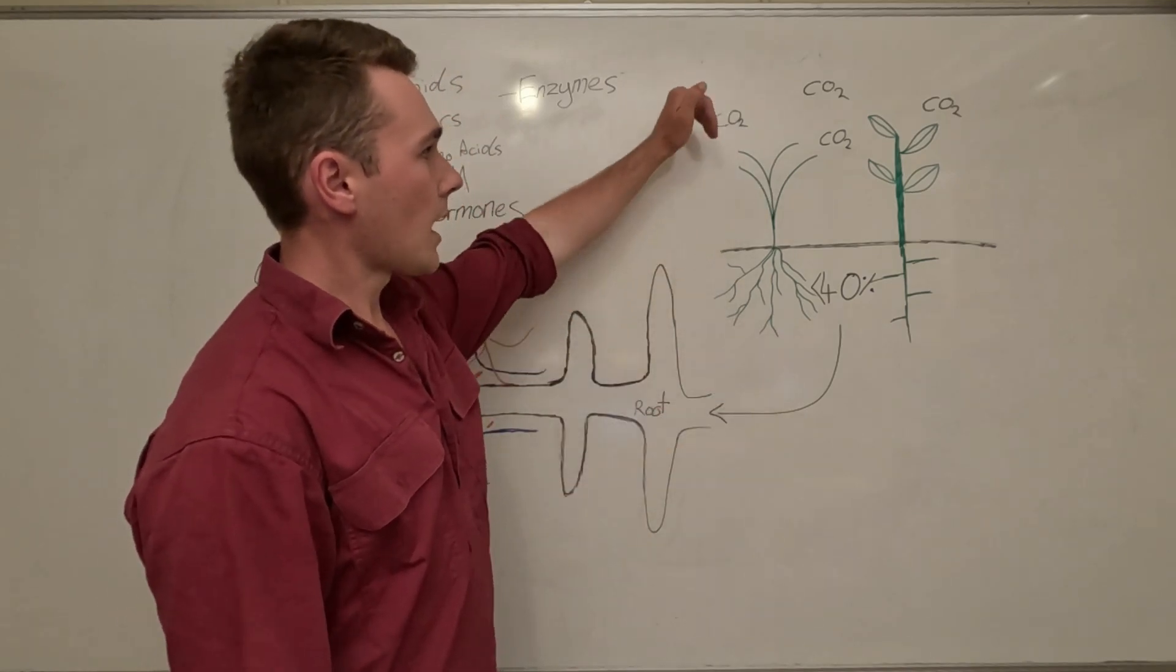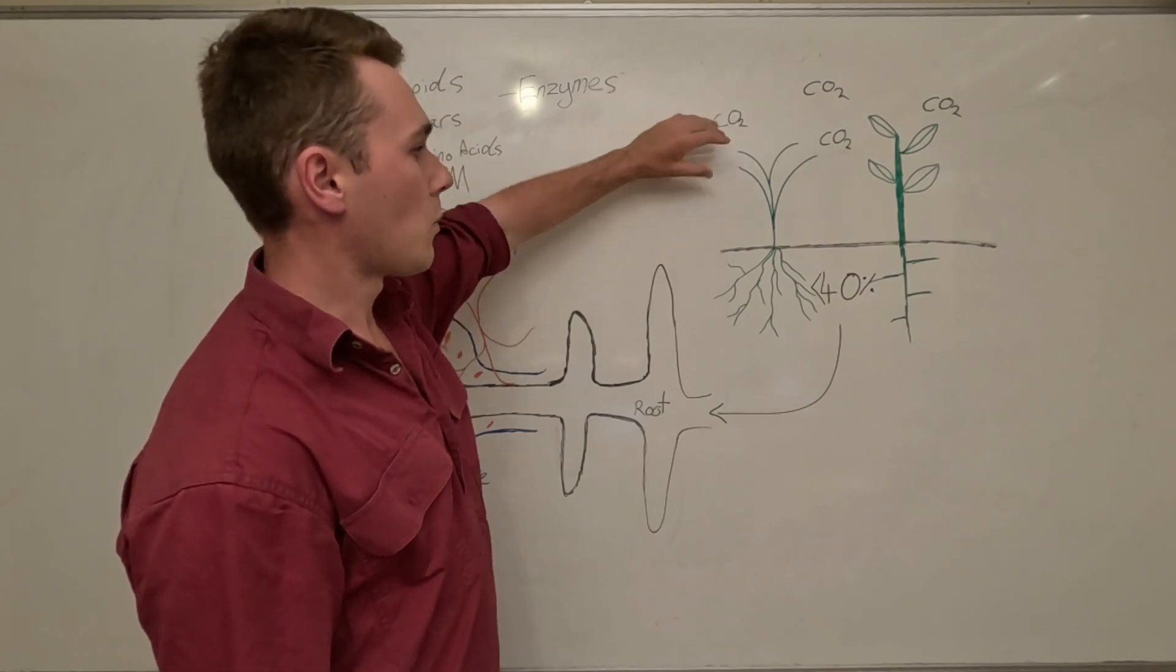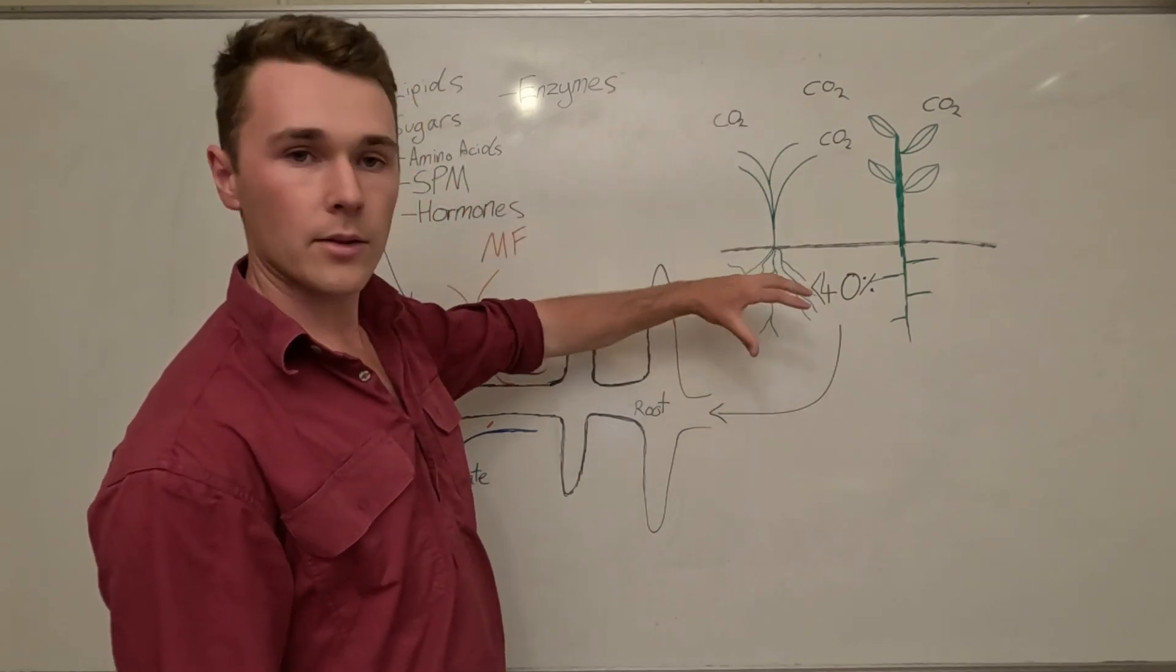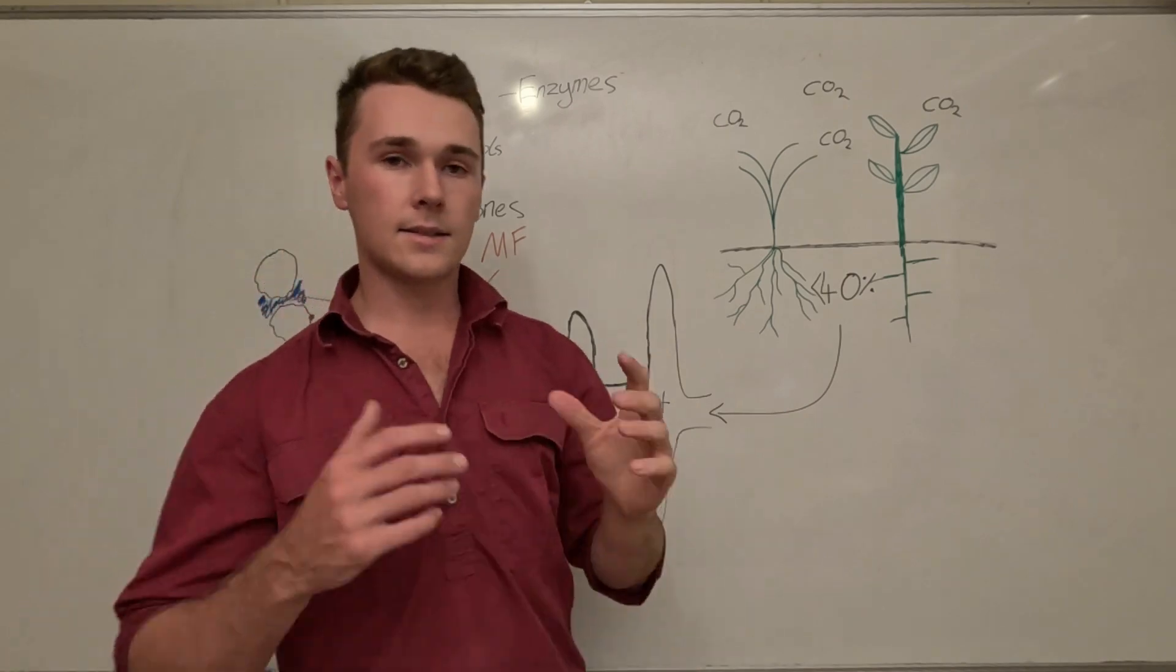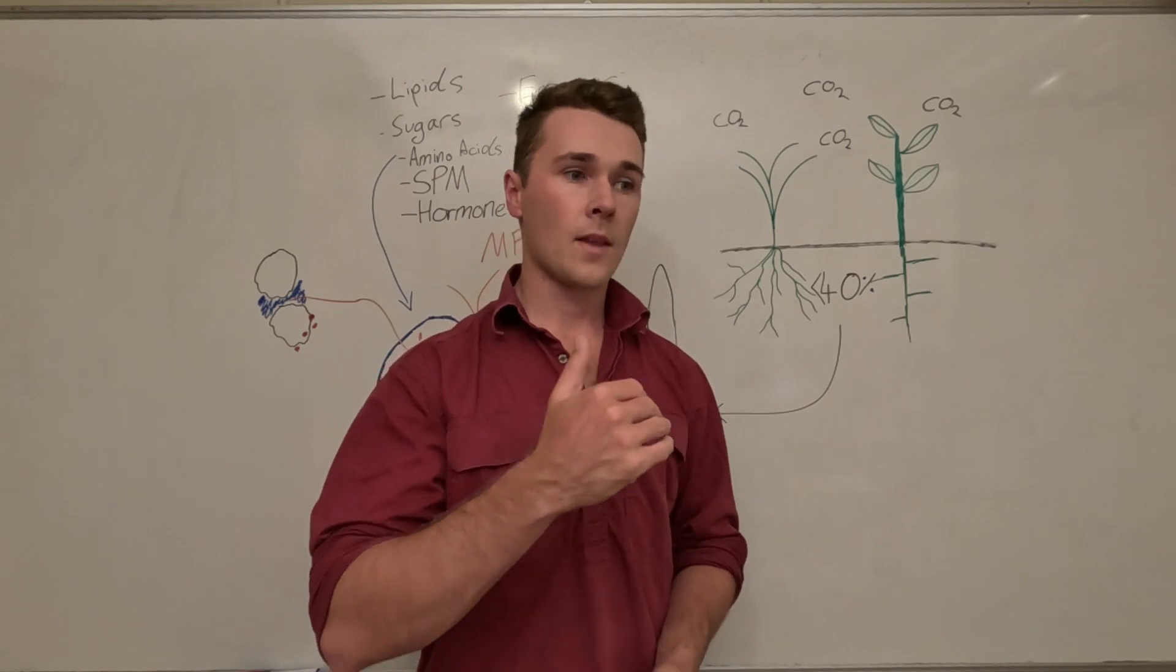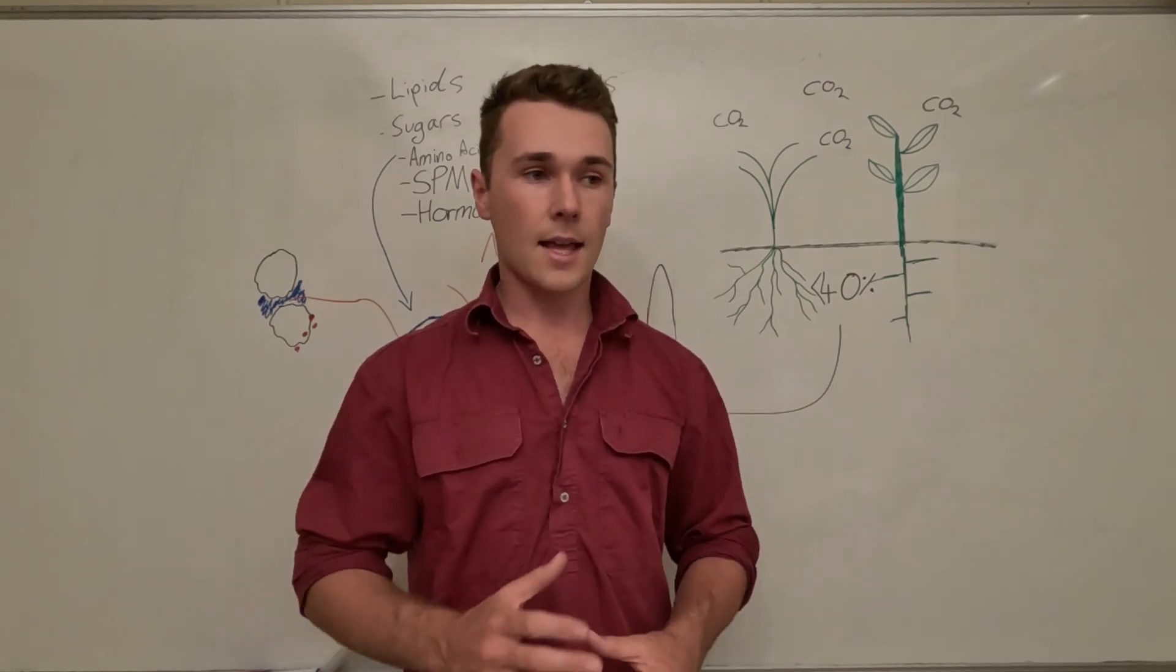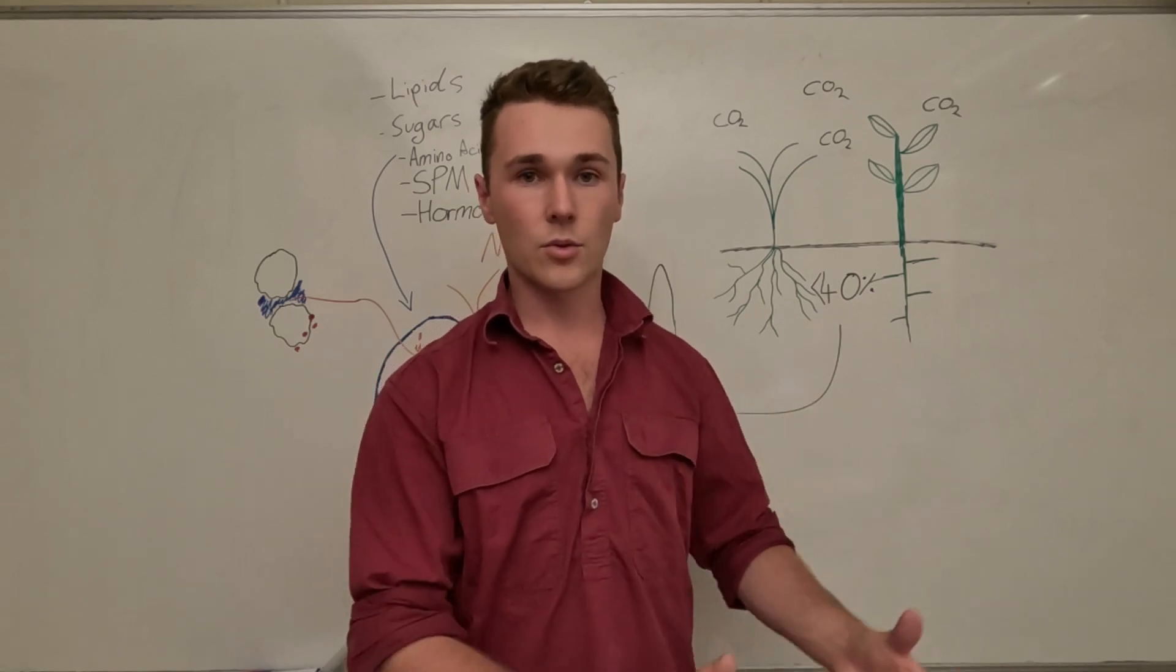Plants will fix carbon into sugar through photosynthesis and then what they will do is push that out through their roots. It's suggested that up to 40 percent of the sugars that a plant produces can be released through its roots.